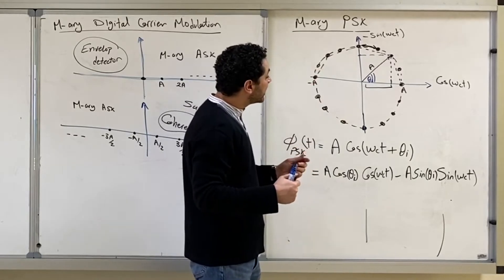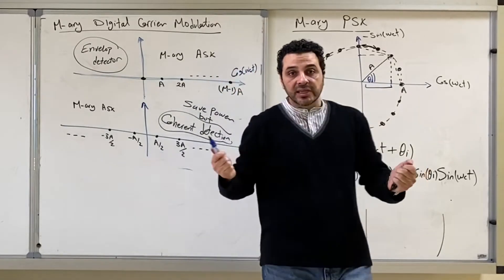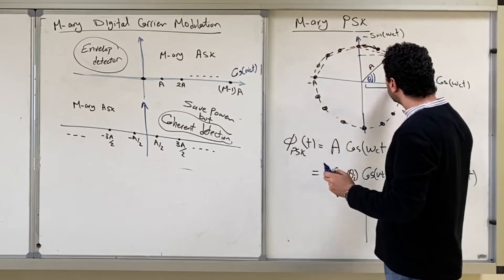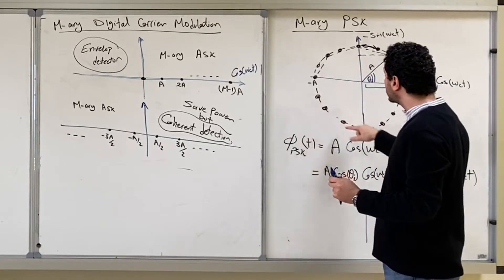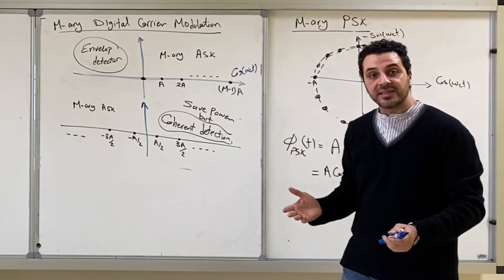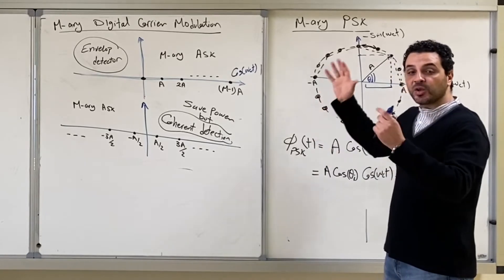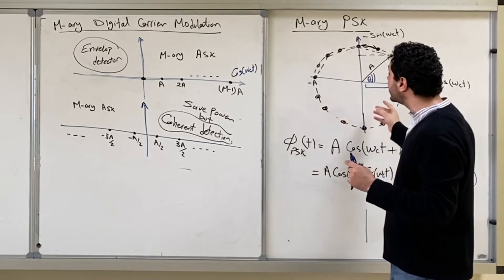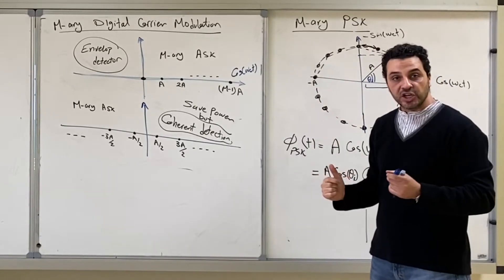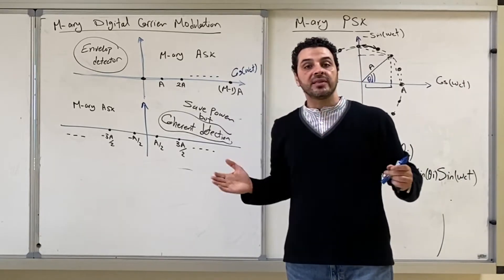If we look at PSK, apparently we are using both dimensions — cosine and sine directions. But this is actually not true, because although you are using two dimensions, all the constellation points are on a circle. They are not free to move anywhere in the two dimensions. In polar coordinates, you will find that in PSK you are moving on one dimension only — the radius R is constant, and theta is the only dimension changing. So here also we are using only one dimension.